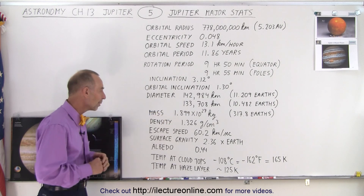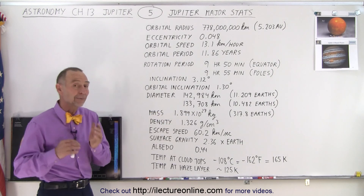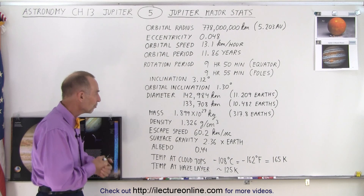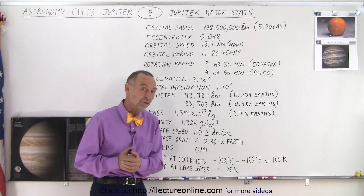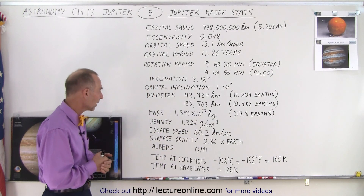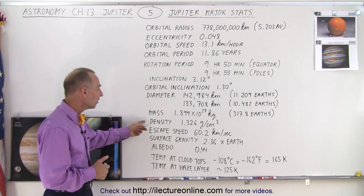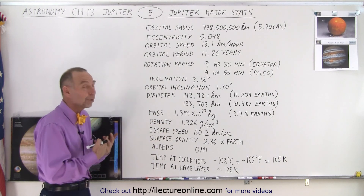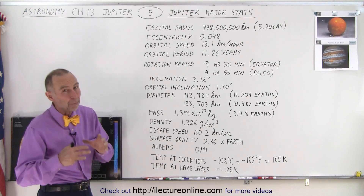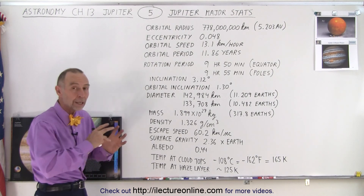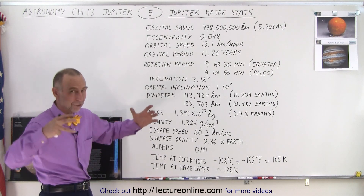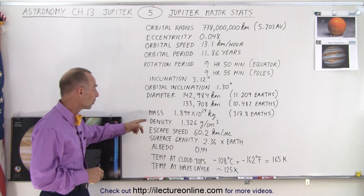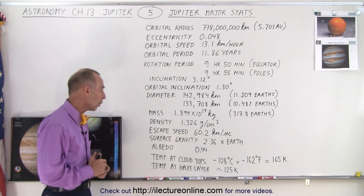The total mass of the planet is just shy of 1.9 times 10 to the 27 kilograms, which means it has the mass of almost 318 Earths. The density is a little bit over the density of water, and it's actually quite a bit more dense than Saturn. Part of it is that it does have a rocky core, and it's also a bigger planet so it's compressed more.